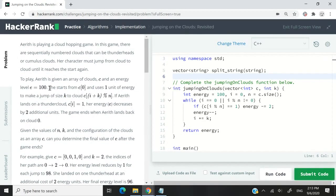If she lands on a cumulus cloud, she still uses only a single unit of energy. But if she lands on a thunderhead, then she uses two more units of energy.